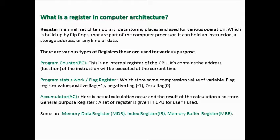Accumulator: here actual calculations occur and the result of the calculation is also stored. General Purpose Register: a set of registers given in the CPU for user use. Some examples are Memory Data Register (MDR), Index Register (IR), and Memory Buffer Register (MBR).